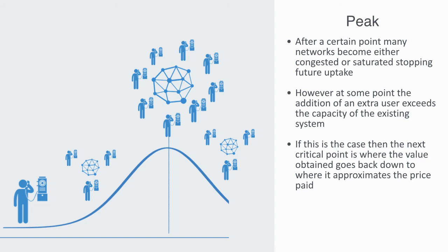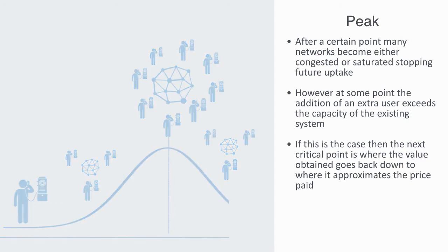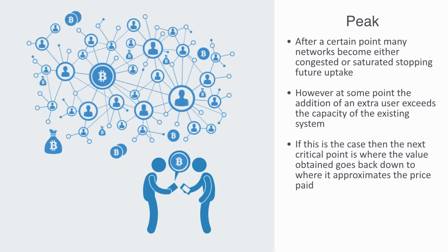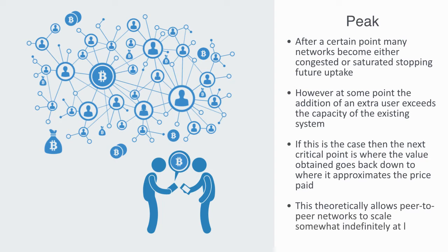This is the case for centralized systems, but may not be the case for distributed networks. New peer-to-peer network models, such as Bitcoin, may always defy congestion. True peer-to-peer networks are designed to distribute out the network's load amongst their users. This theoretically allows peer-to-peer networks to scale somewhat indefinitely, at least until market saturation.